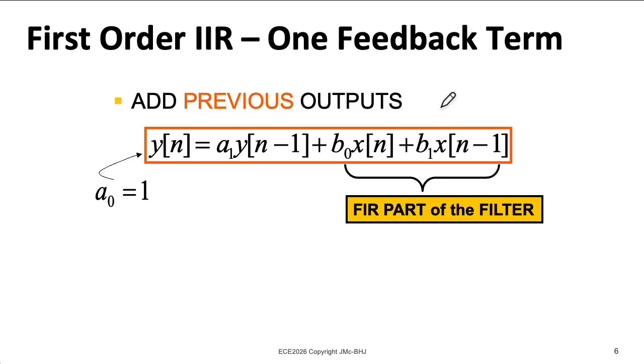So let's look at an example where M equals 1. So we're going to use the current input and the previous input scaled by b_0 and b_1. And we're going to add to that the result of the previous output multiplied by a_1. To be consistent, we might imagine that y[n] is being multiplied by a coefficient a_0, but that's always 1.